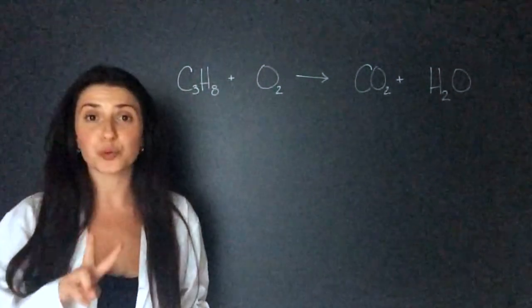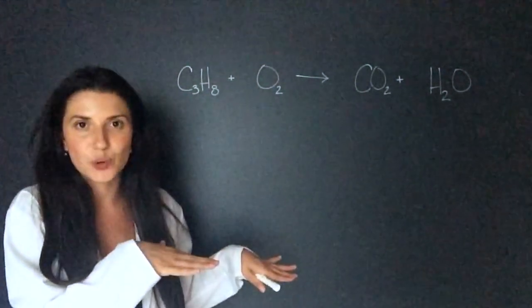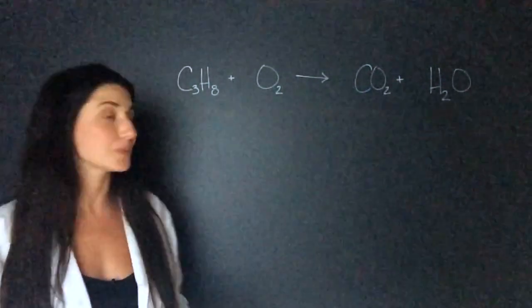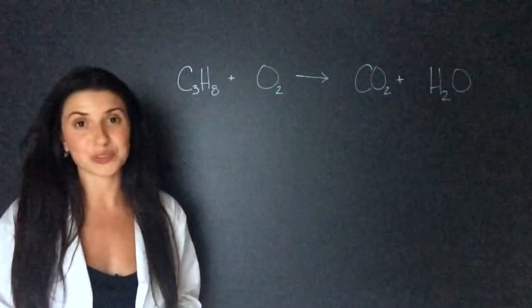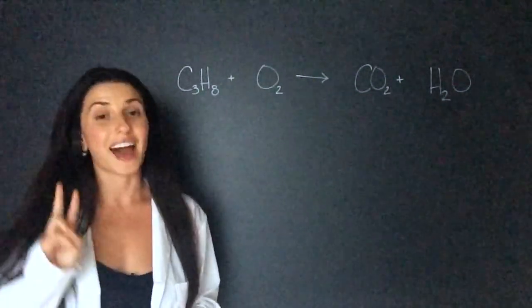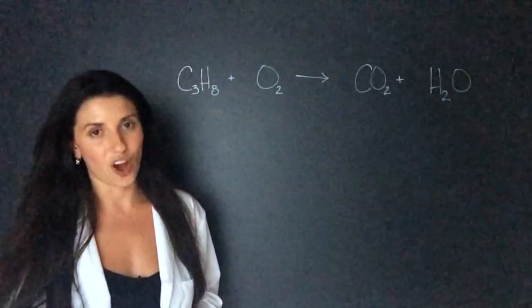So remember our rule number two, we can't add anything to this equation. All we can do is add a stoichiometry coefficient or a multiplier in front of these molecules. The general rule of thumb is to make sure you balance the carbon first, the hydrogen second, and then the oxygen.